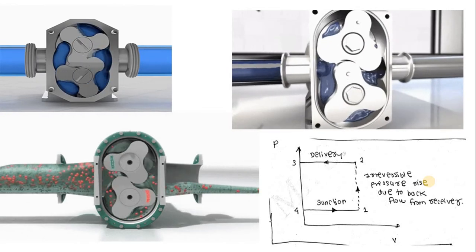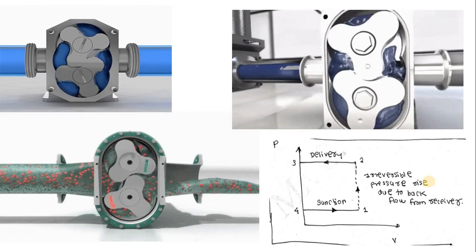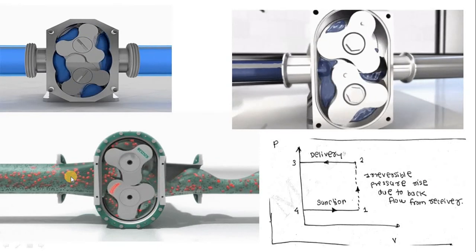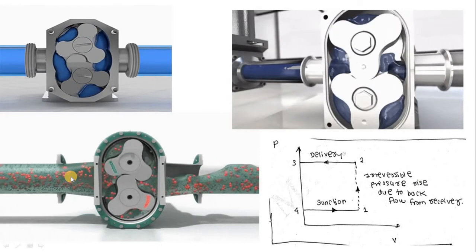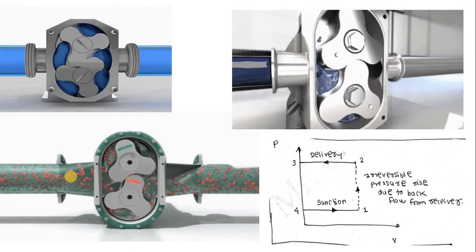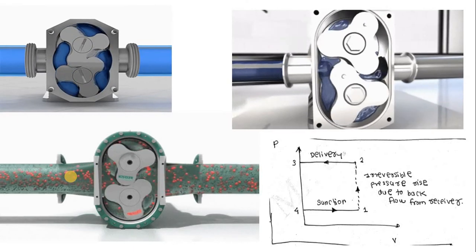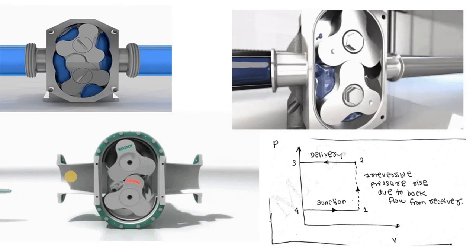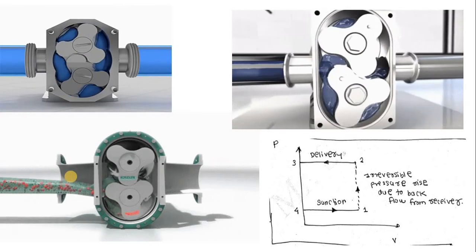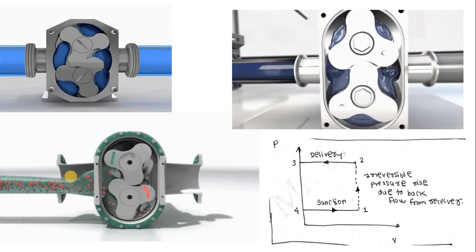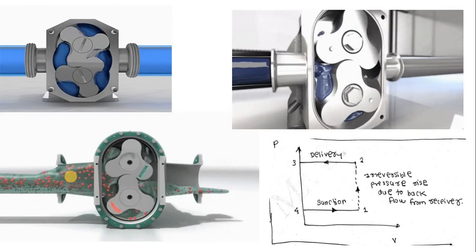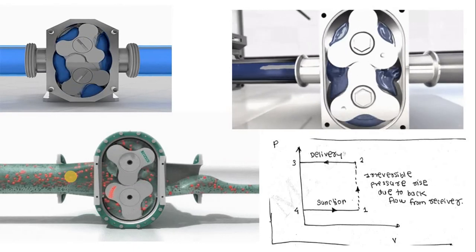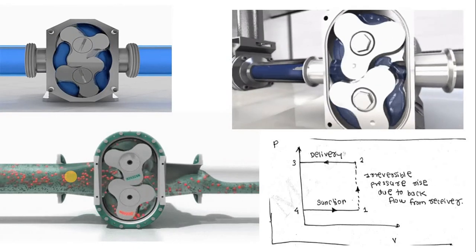Globe type of the compressor. Such kind of compressors are just similar to the root or lobe kind of pump as well. Working is the same, but here only in case of the compressor the working fluid is different.